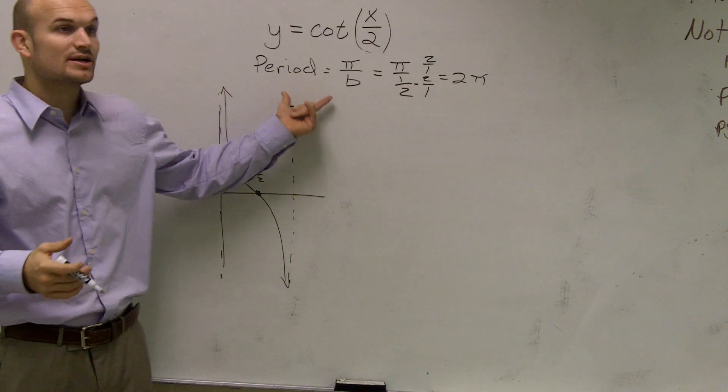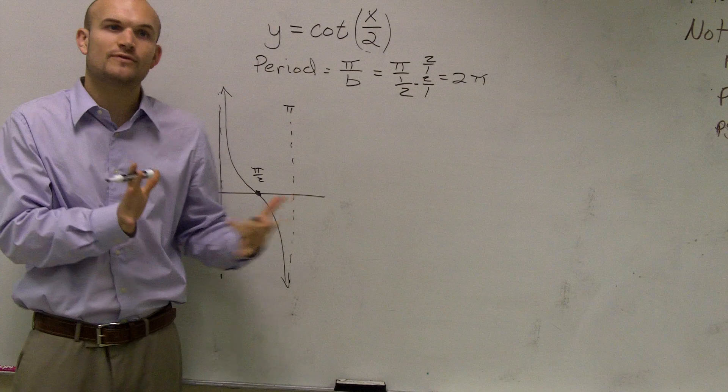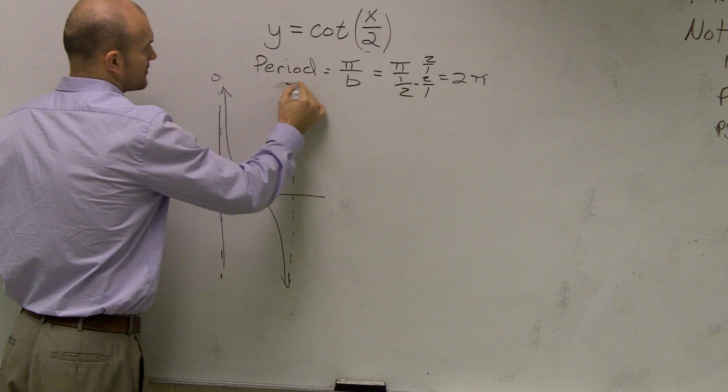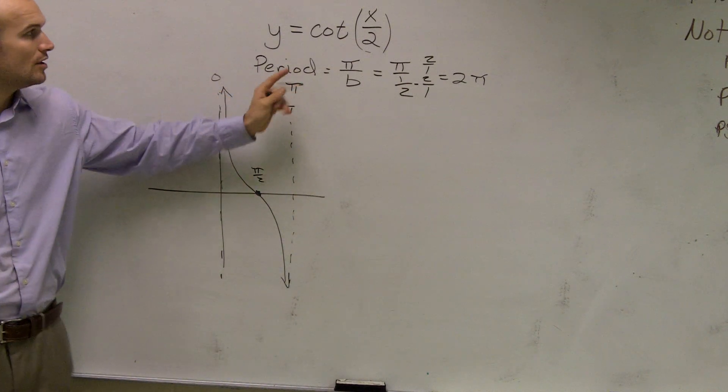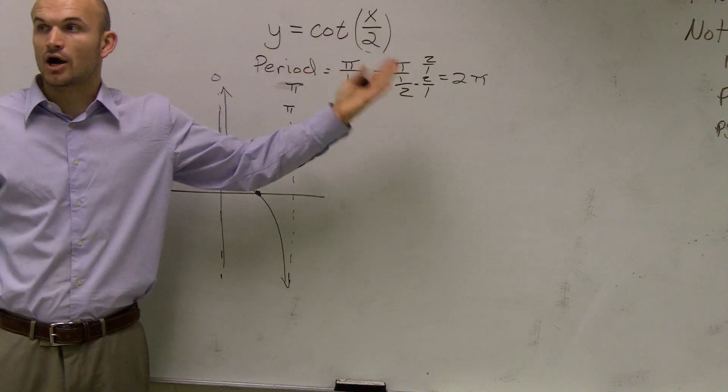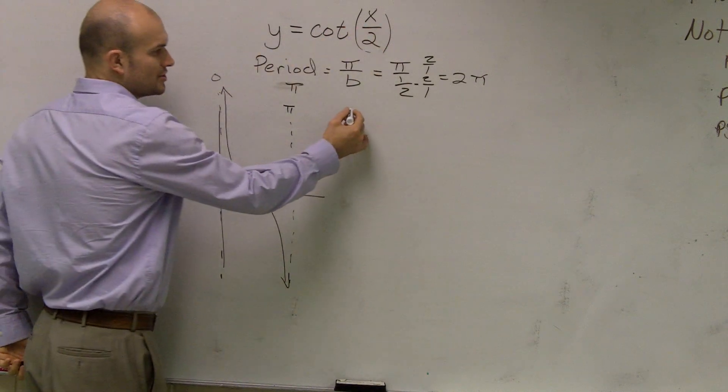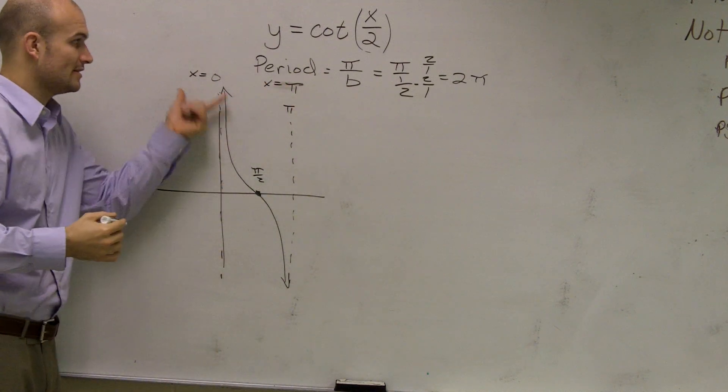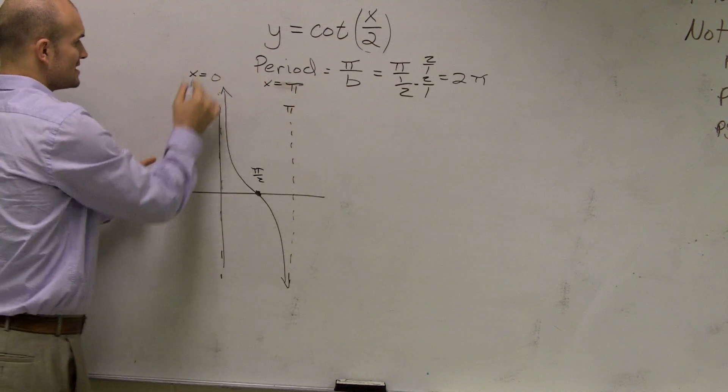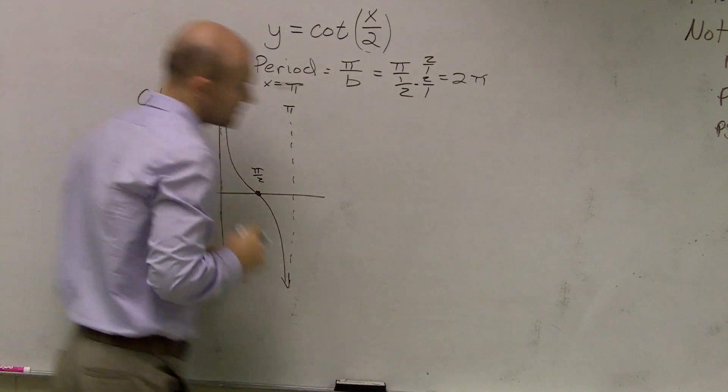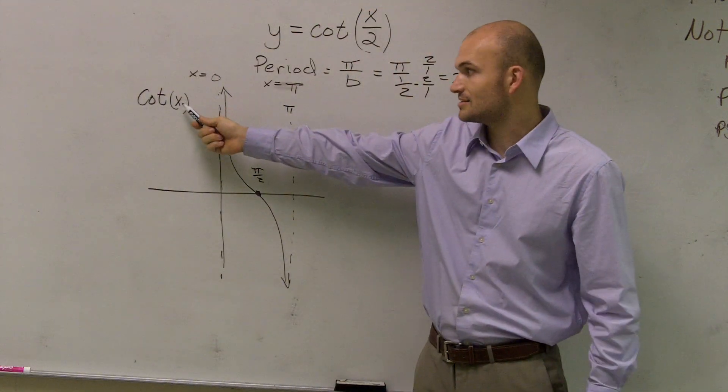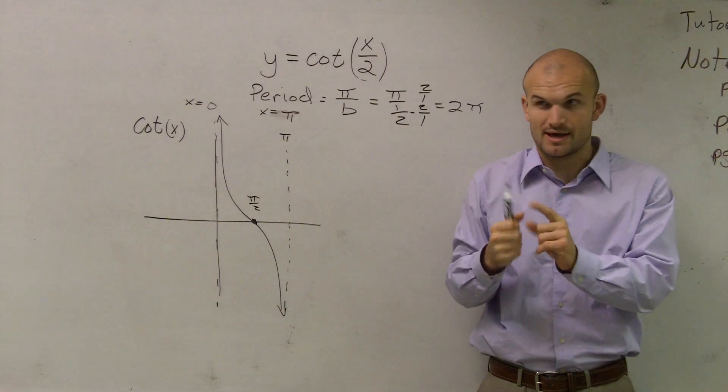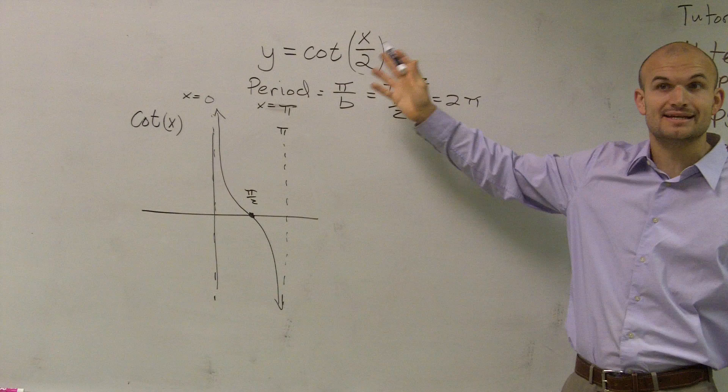Well, now what happens is our period is now just changed to 2π. Now there's one thing that's really helpful for you guys to do. What we want to do is if our original asymptotes were at 0 and π, whatever happens inside our function has now altered our asymptotes. So what I'm going to do is I can say x equals 0 and x equals π. Those are my x values, and that is for cotangent of x. For cotangent of x, your x values are equal to 0 and π. That's just for one period.